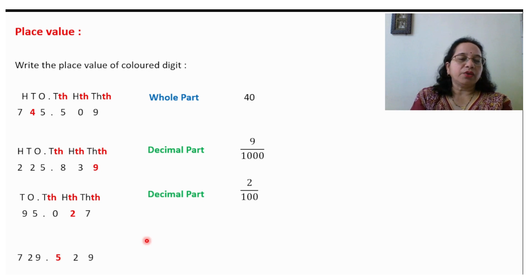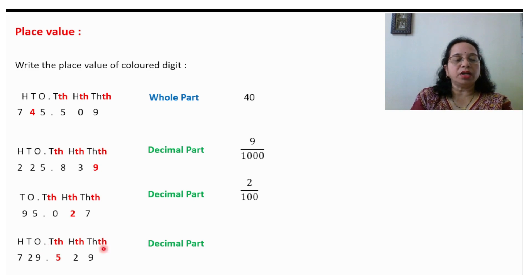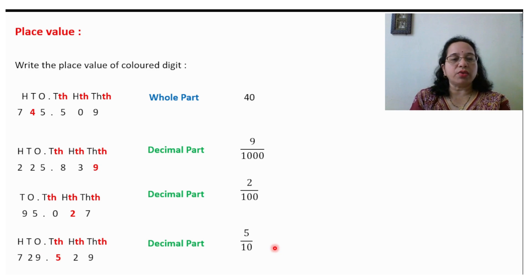Take one more example. Write down the places. 5 is in the decimal part — 5 is in the tenths place. This means 10 will come in the denominator. So the place value of 5 will be 5 upon 10.